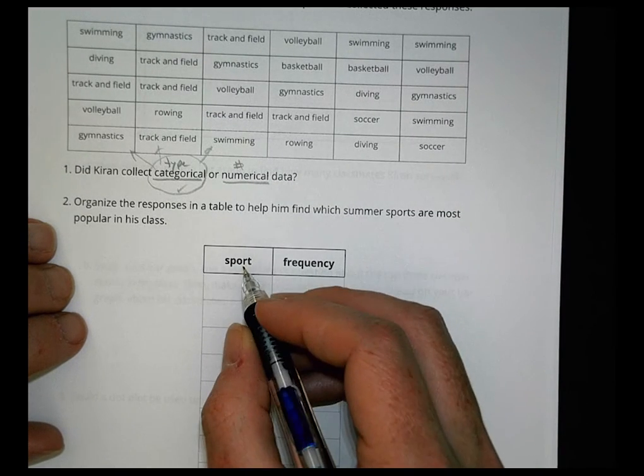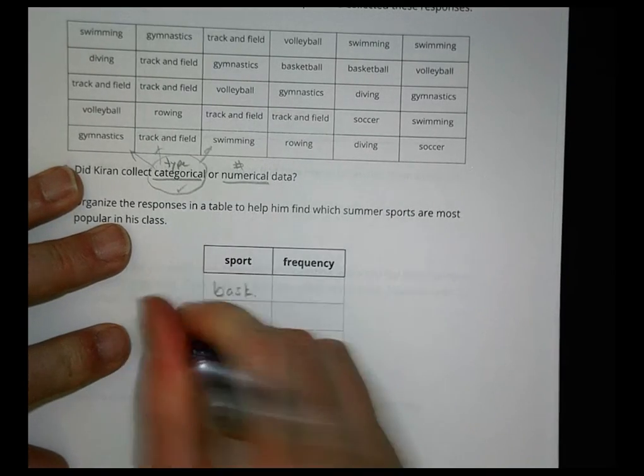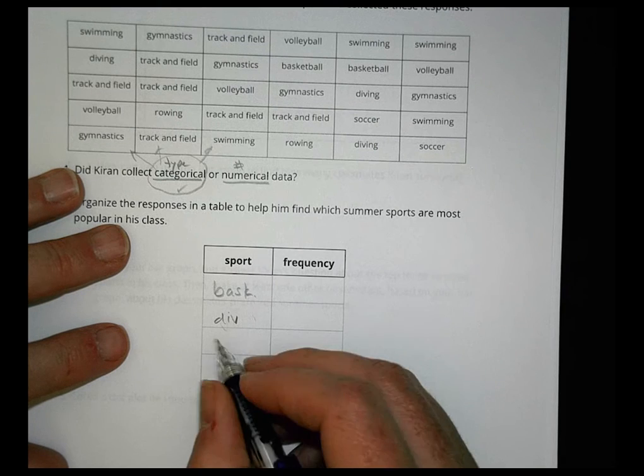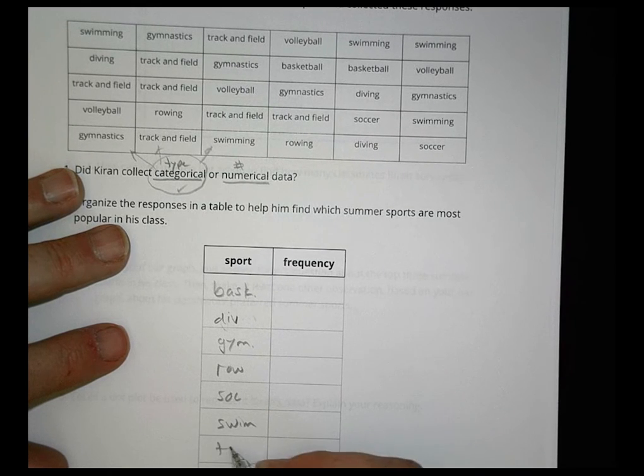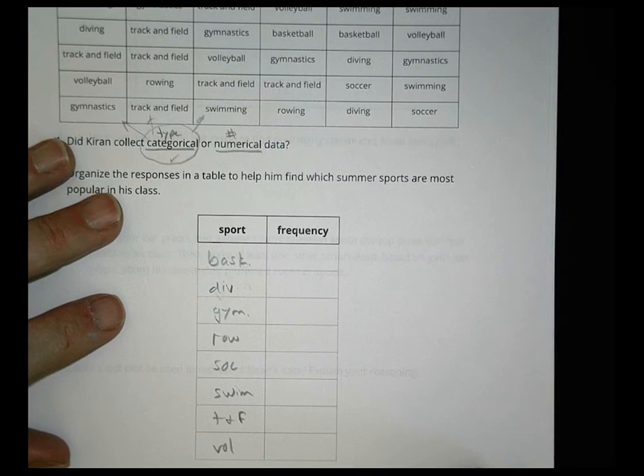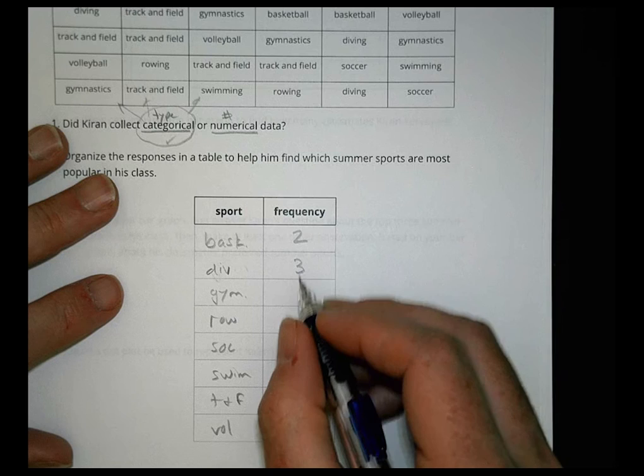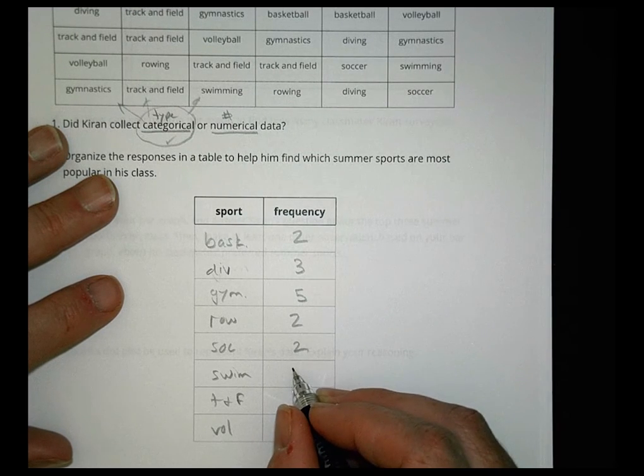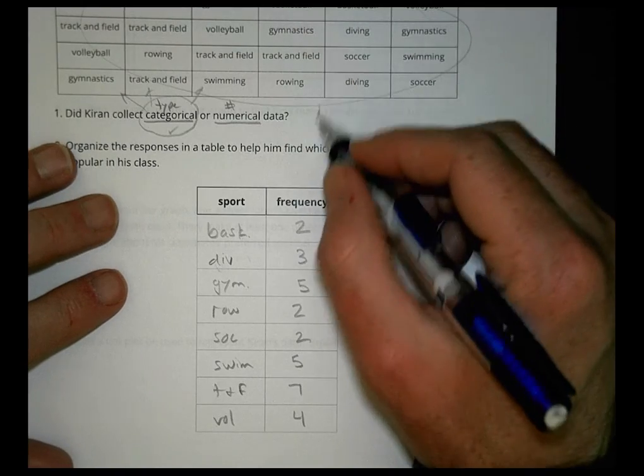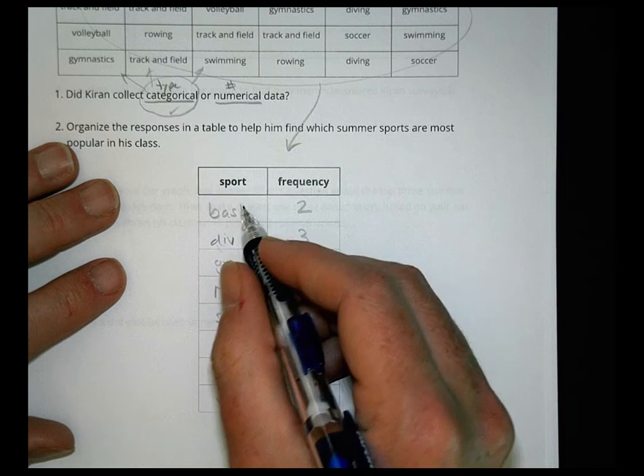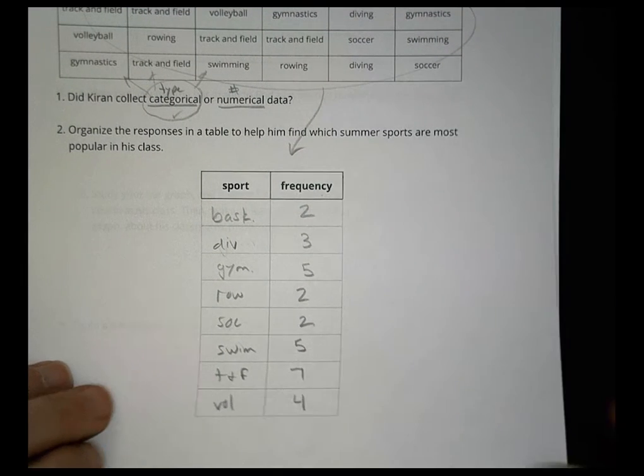So we take that information and put it into this table here, sport and frequency. And we're going to put it in alphabetical order. So we have basketball, diving, gymnastics, rowing, soccer, swimming, track and field, and volleyball. Those are our options there. Now when you go back and add these up and see how many are in there, we have two that like basketball, three that like diving, five gymnastics, two rowing, two soccer, five swimming, seven track and field, and four volleyball. So when you take this categorical data and you group it like this, we can see the frequency of responses for each one of those different categories. And now using that, we can use this information to organize it into a bar graph and make some more comparisons.